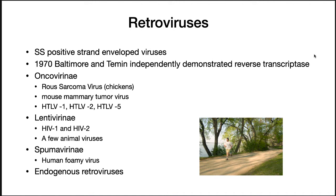Retroviruses can actually be classified into three different groups: the oncovirinae, the lentivirinae, which have HIV-1 and HIV-2 and is the topic of this lecture, and the spumavirinae, which are human foamy viruses.